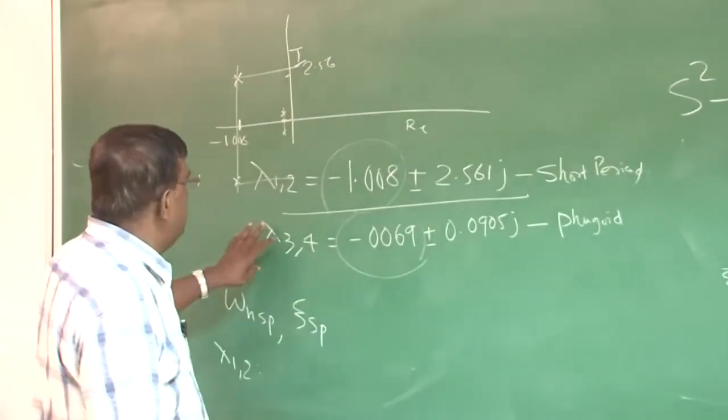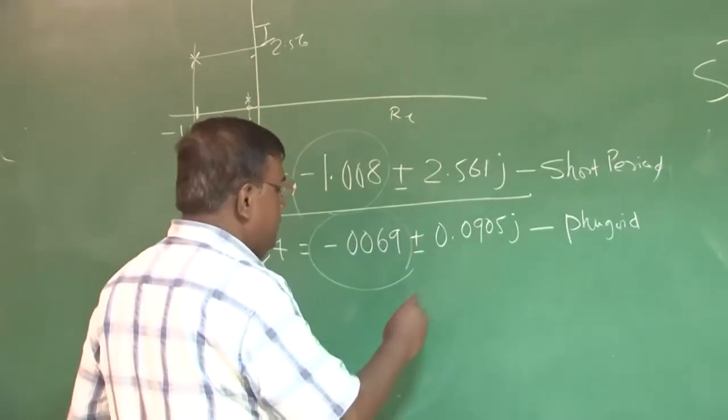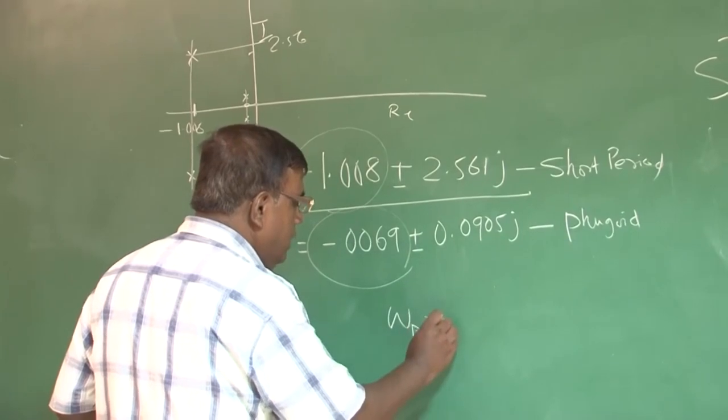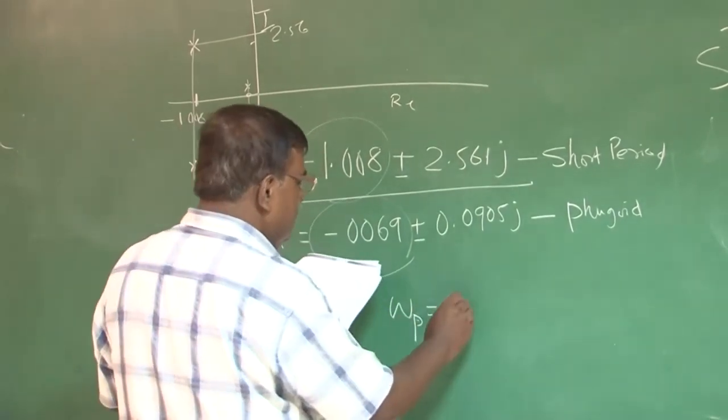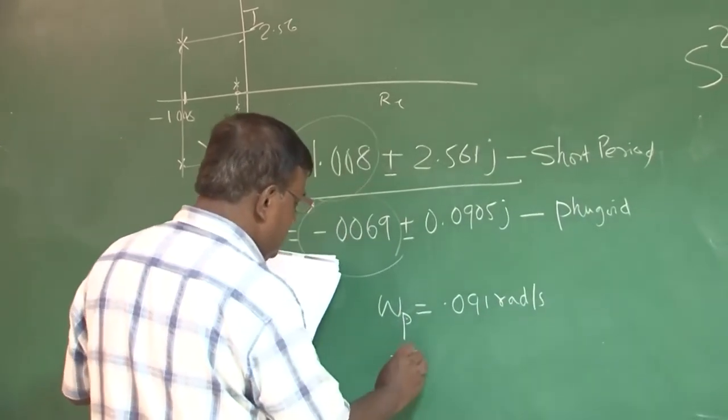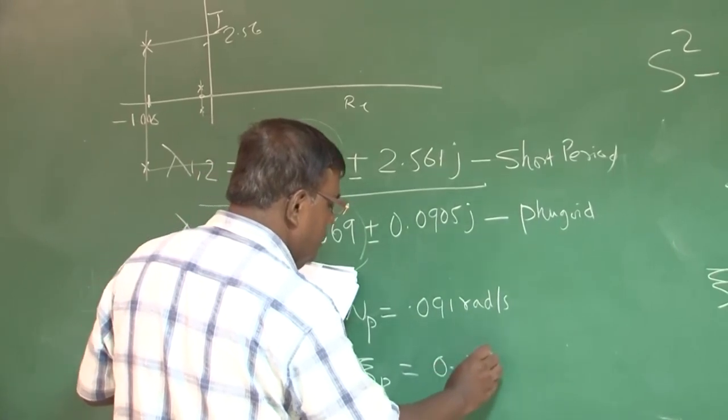Now if you take the second pair of root lambda_3 and 4, if you do similar exercise, you will find omega_n fugoid as 0.091 radian per second and zeta fugoid you will get as 0.76.